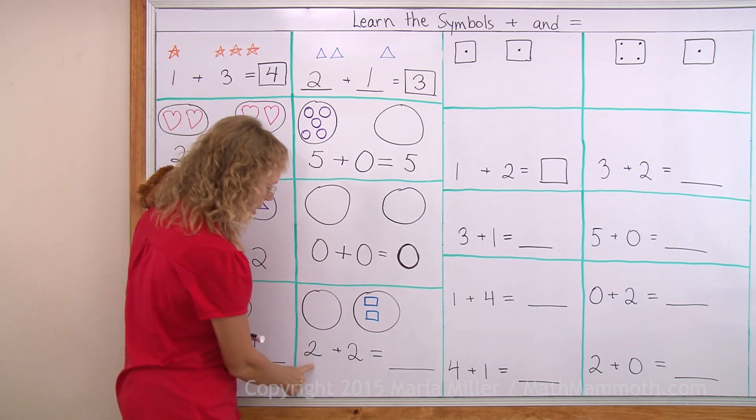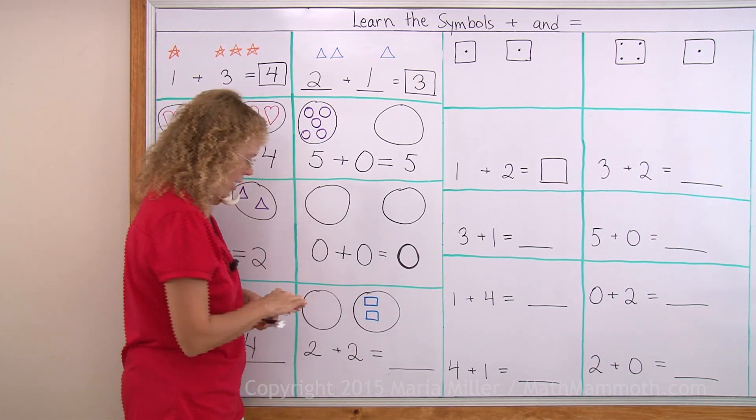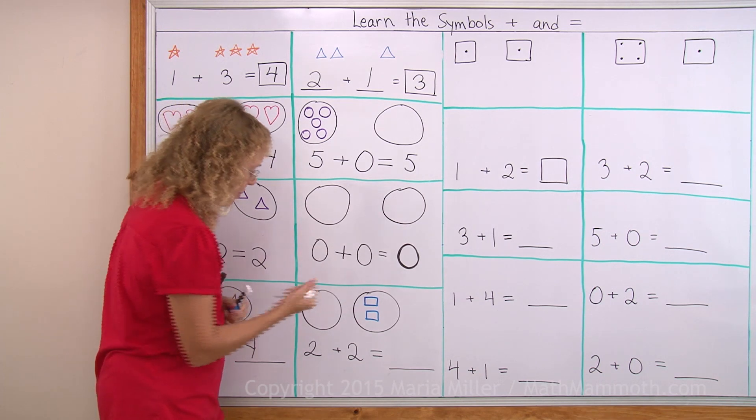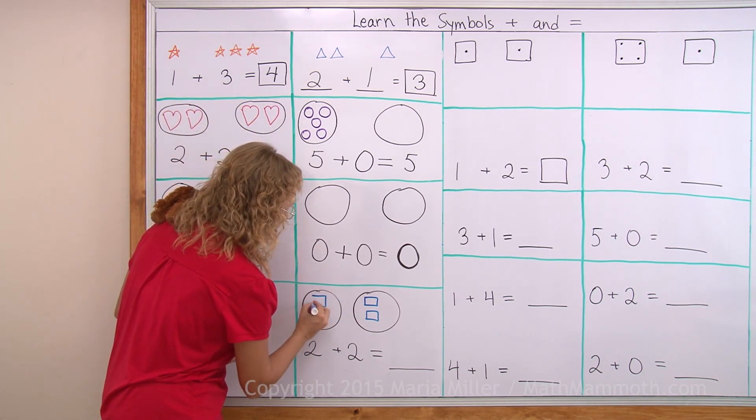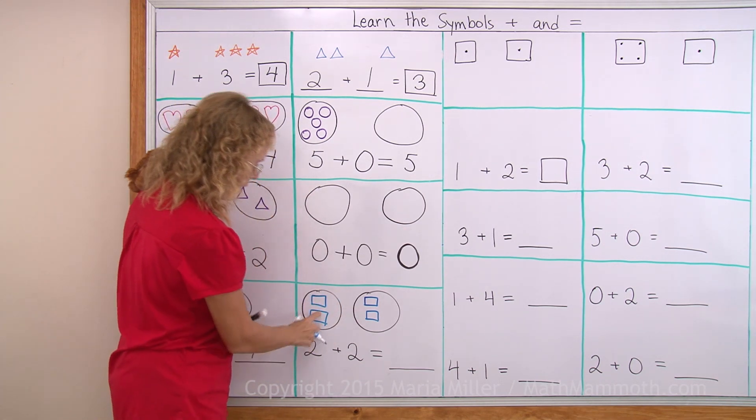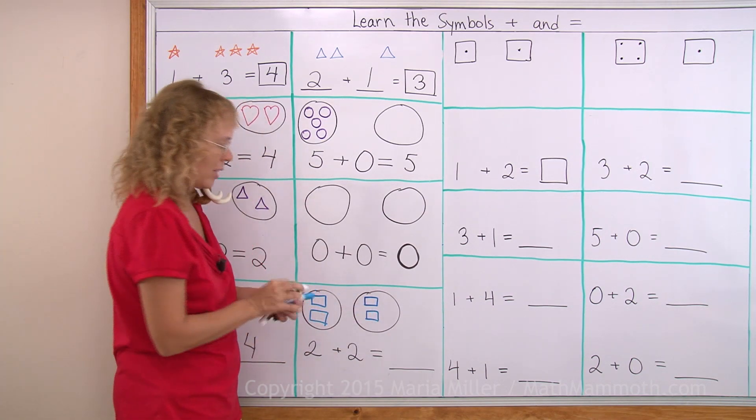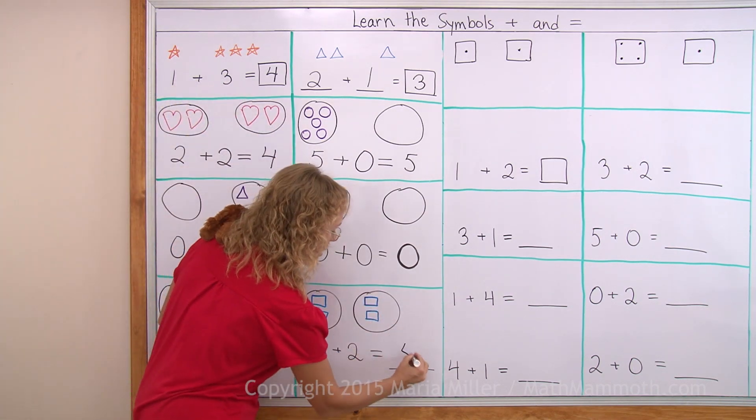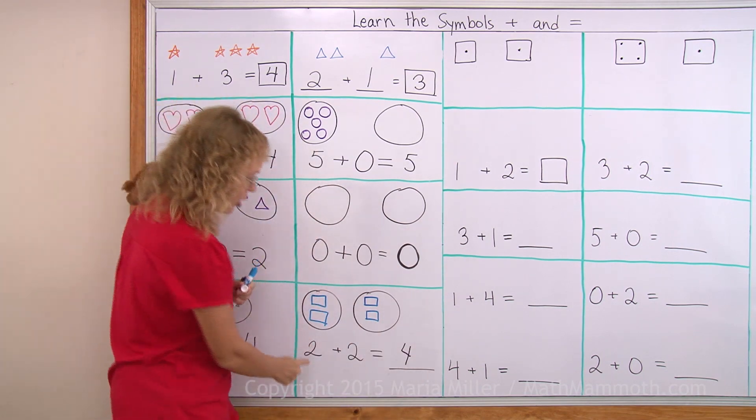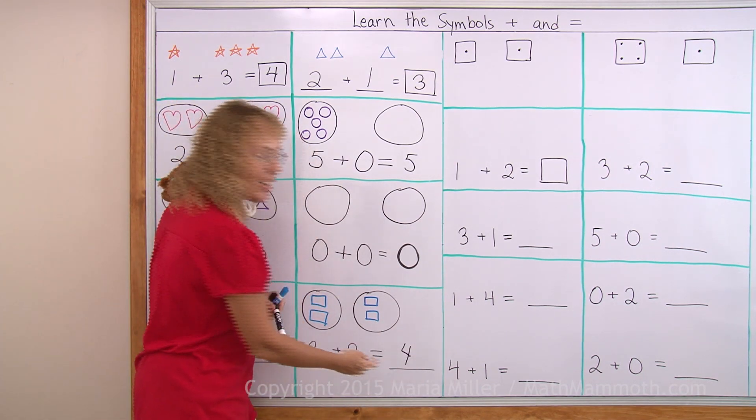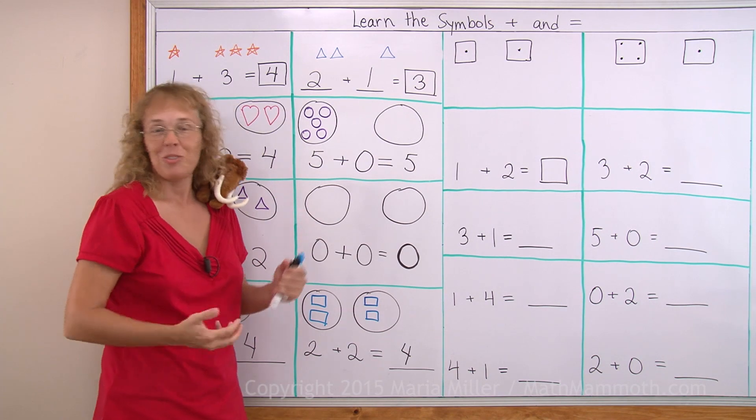Over here again. Two plus two. But I need to draw some more into this empty group. I draw two more. And then I count the total. One, two, three, four. Four in total. If I read the addition, it is two plus two equals four. It is a very well known addition problem.